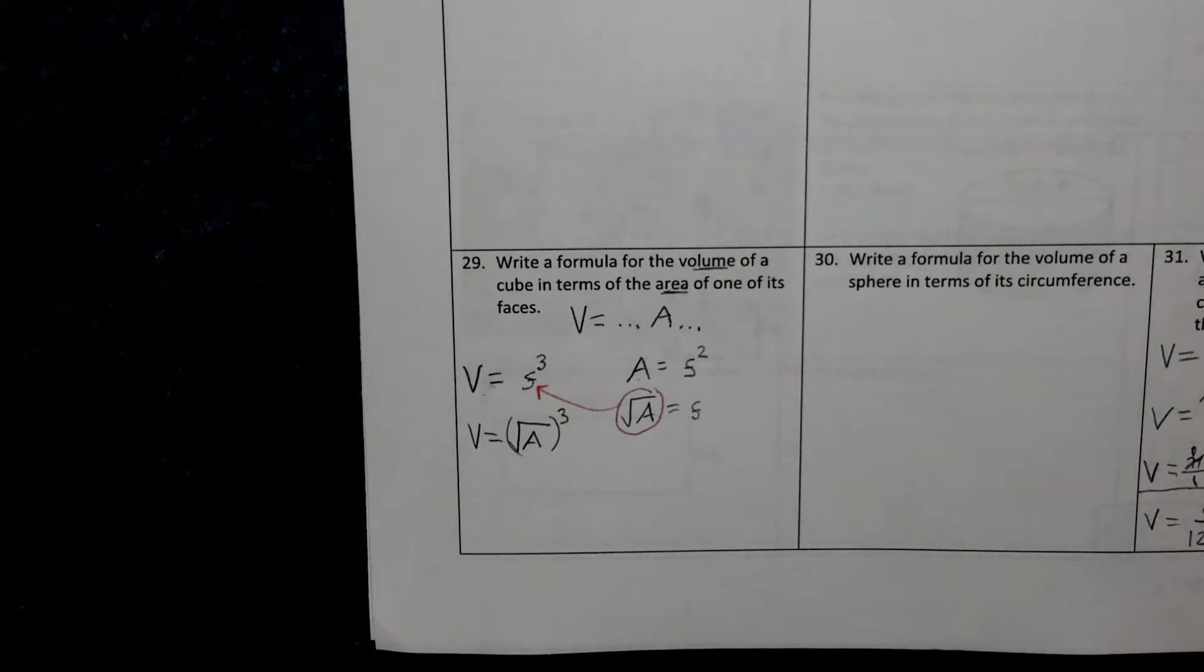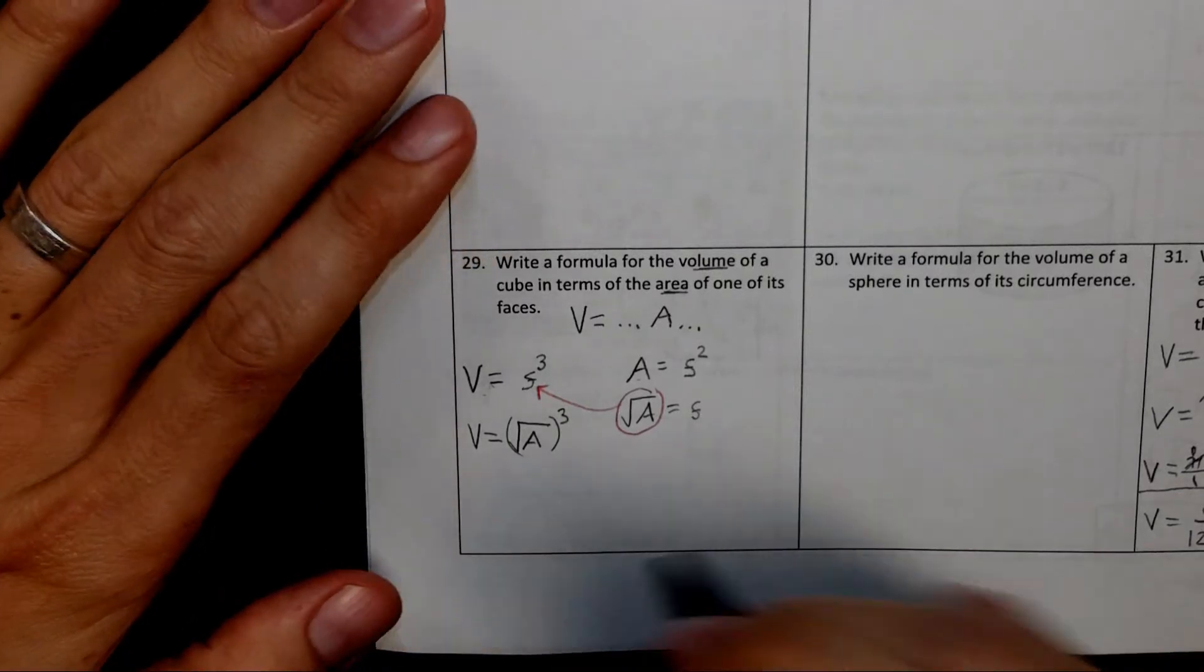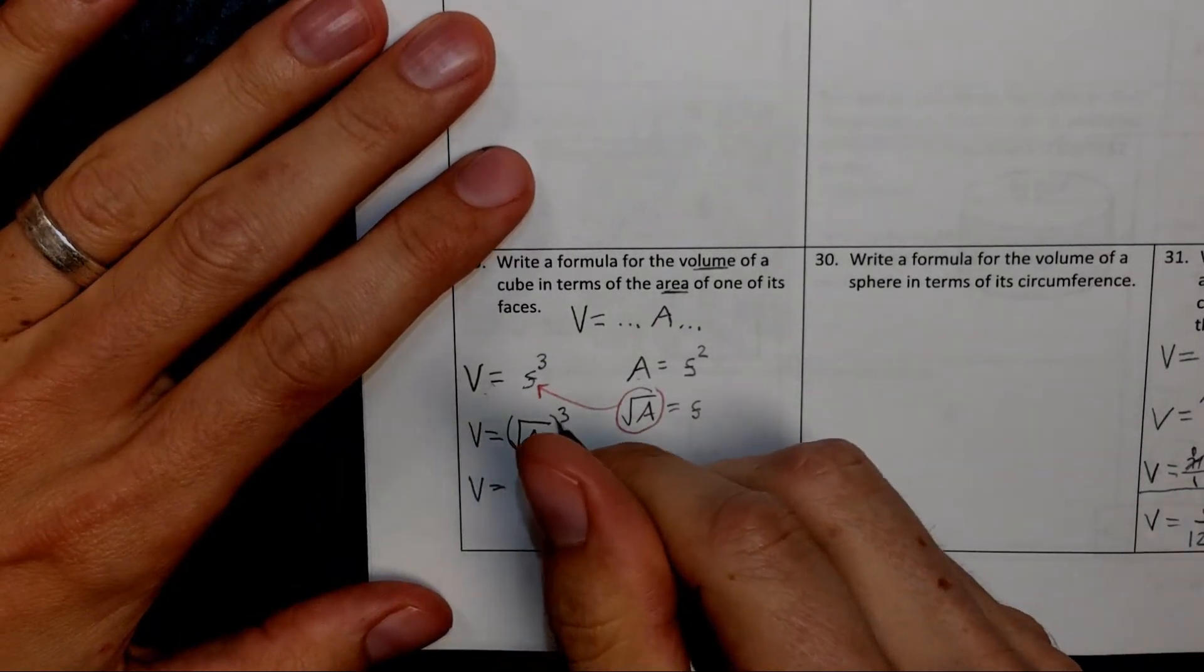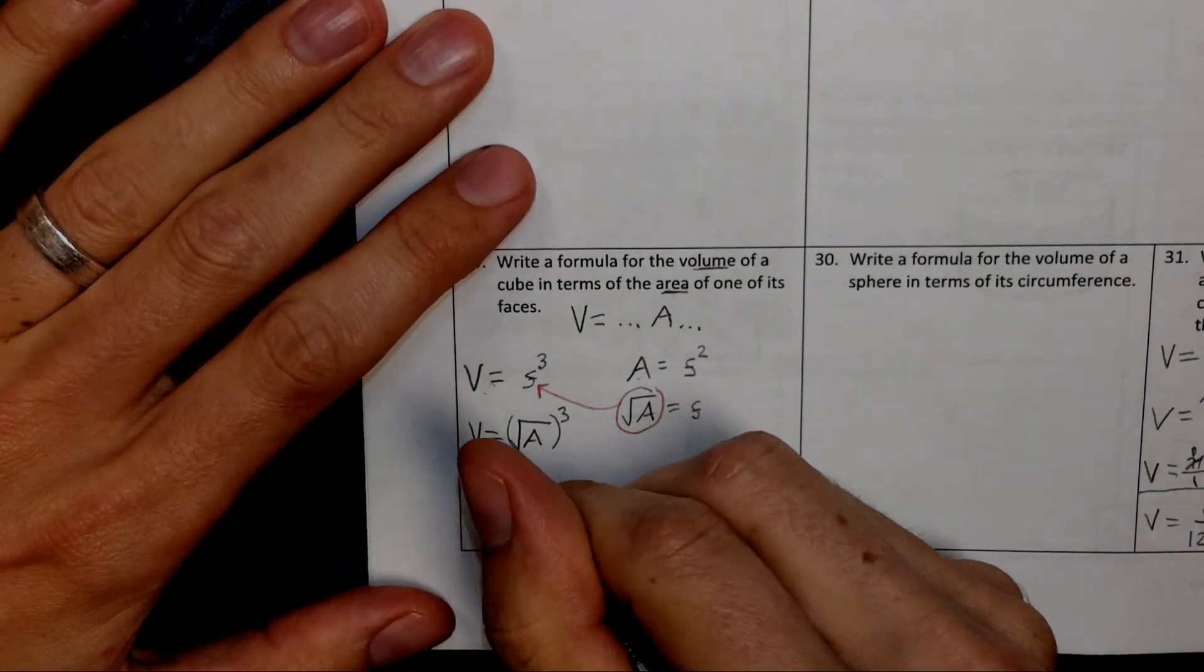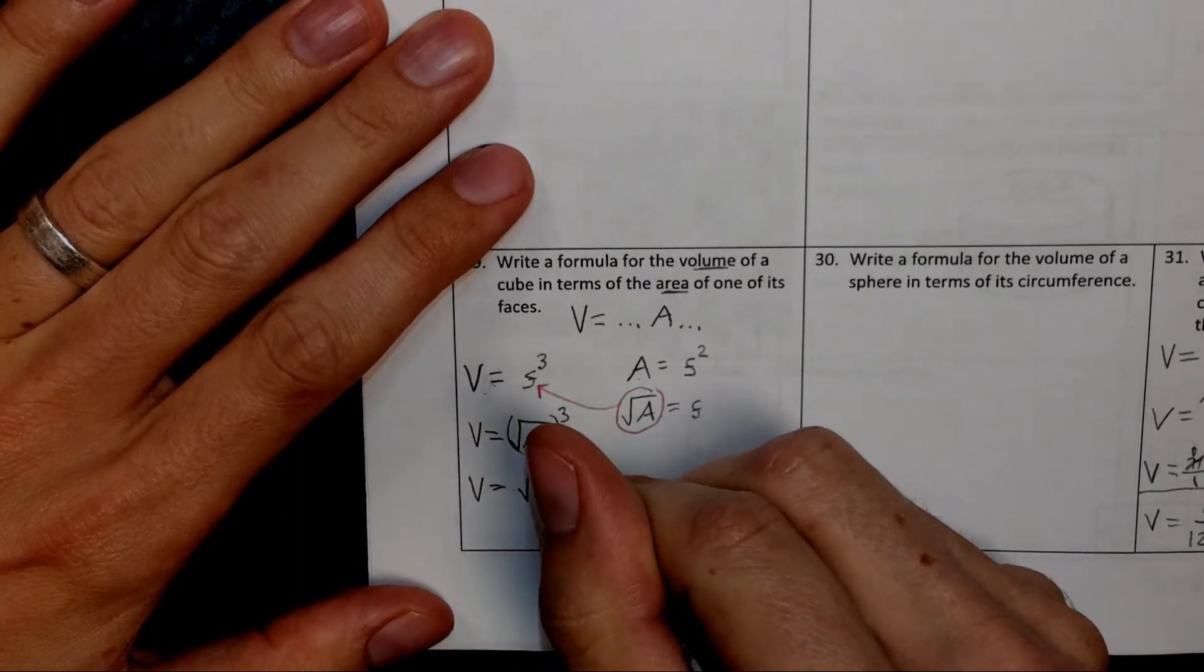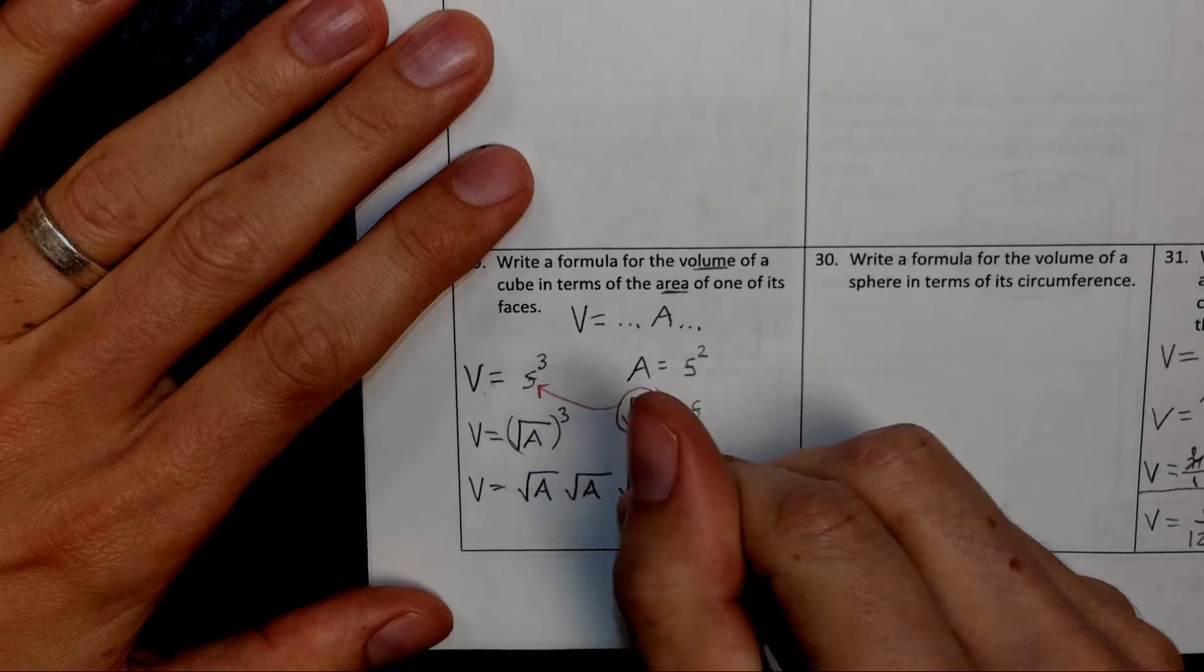So that would be one way to write it. Is there a simpler way to write it? Maybe it would be simpler. Well, let's try and cube this. So write it out. Cubing anything, remember, is that thing that you're cubing multiplied together three times.